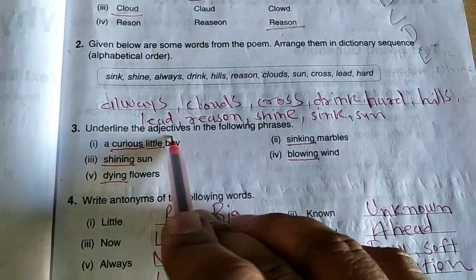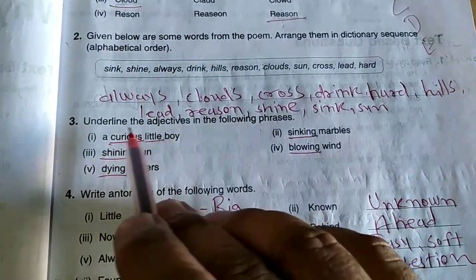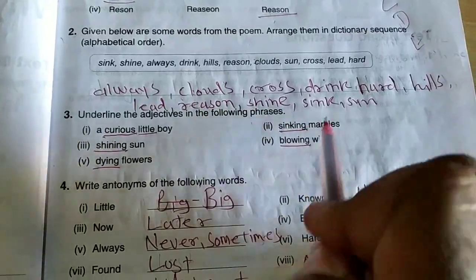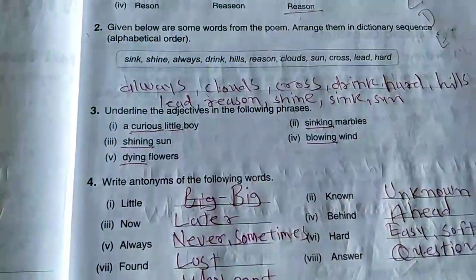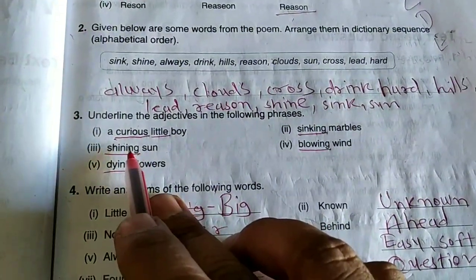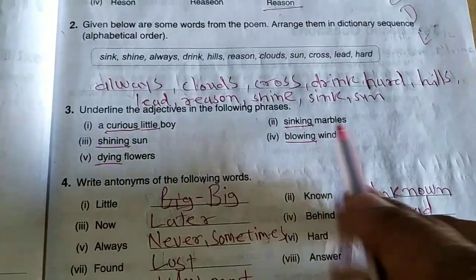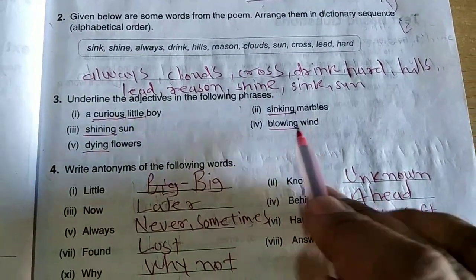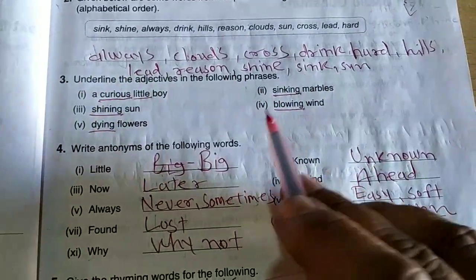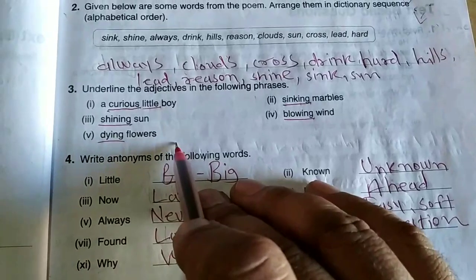Underline the adjectives in the following phrases. 'A curious little boy' has two adjectives: curious and little. 'Sinking marbles' — sinking means doobti hui. 'Shining sun' — chamakta hua surya, so 'shining' is the adjective. 'Blowing wind' — the wind is blowing, so 'blowing' is the adjective.